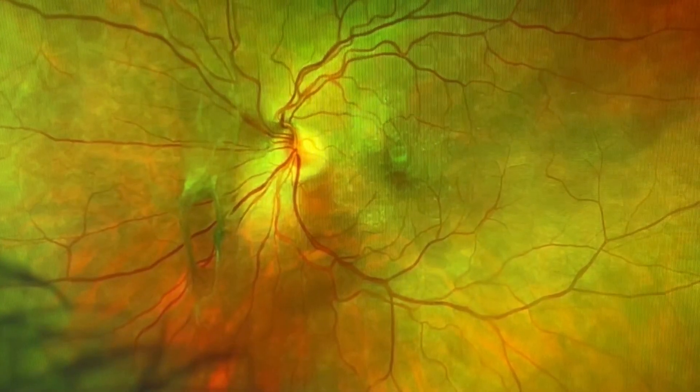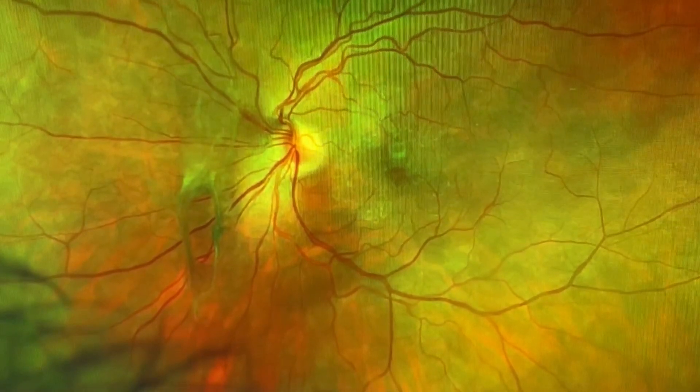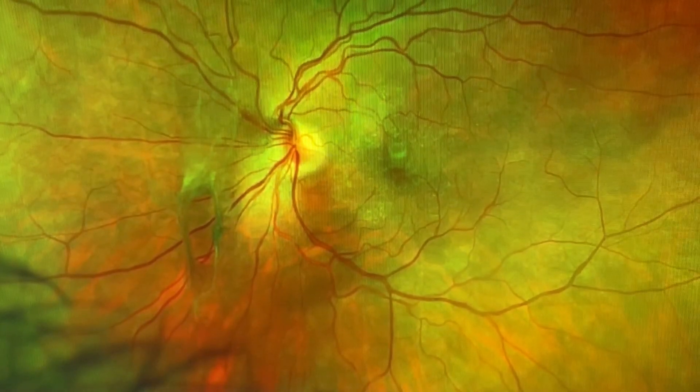This is a patient who has a very pronounced vitreous floater which we call a Weiss ring. Again, the vitreous is the jelly in the back of the eye.